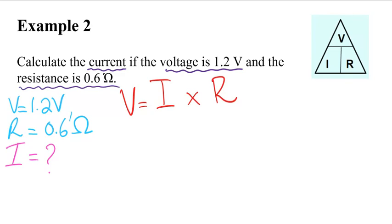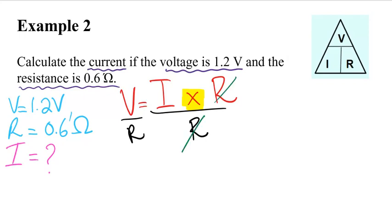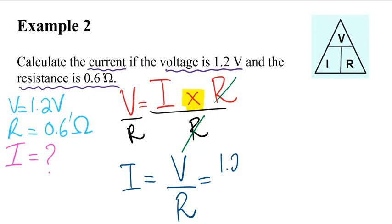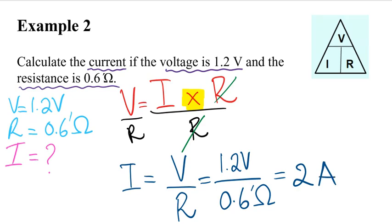We're going to manipulate the formula to isolate I, because that's what we need to solve for. We are multiplying resistance with current, so we're going to divide by R — that's the opposite. What we do to one side, we do to the other side. They cancel each other out and we're left with I equals V over R. In step four, we plug in the numbers: voltage is 1.2 volts and resistance is 0.6 ohms. Dividing these gives us 2 amps. So the current is 2 amps.